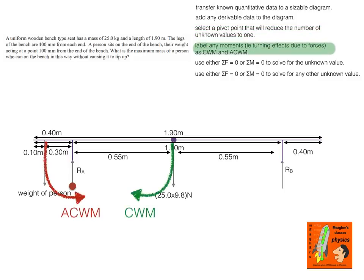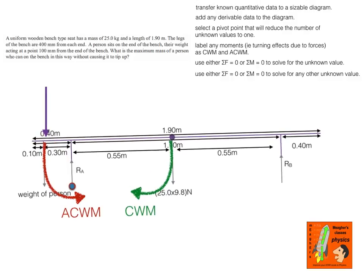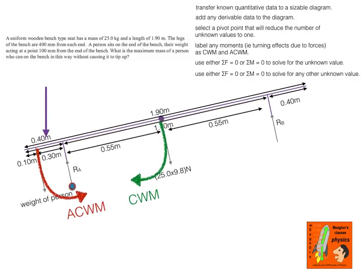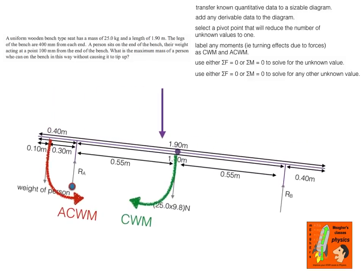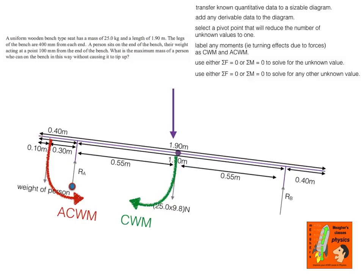Once I've done that I'll label the moments. The weight of the person provides an anti-clockwise moment and the weight of the bench itself provides a clockwise moment. How did I determine those directions? Think of the pivot point as fixed. If there's a force where the person is pushing down and no other force, the bench would rotate anti-clockwise. If the force were at the centre of mass of the bench, it would push it in a clockwise direction. Always look at your diagram and think: if this is the only force acting and the pivot is fixed, which direction will the situation rotate in?